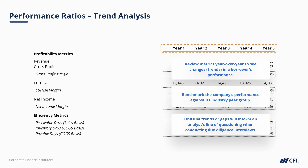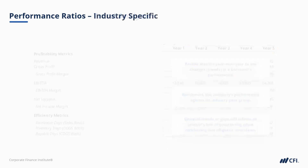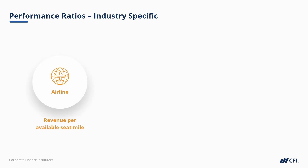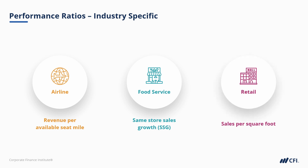Where appropriate, we may also supplement performance analysis by using industry-specific metrics. These aren't necessarily credit-specific, and they aren't really transferable from industry to industry, but they help us understand the borrower's total performance picture. Examples include revenue per available seat mile for an airline, same-store sales growth for a restaurant chain, or sales per square foot for a retailer.